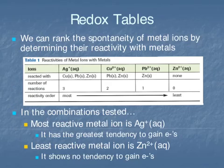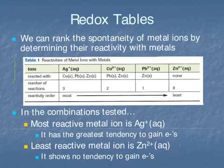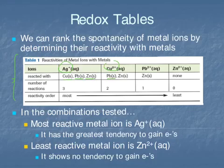Experimentally, we can determine how reactive any particular metal ion is by reacting them with different metals and determining how many different metals those ions react with. For example, in your textbook there is a table that tells you that silver ions will react with copper solid, lead solid, and zinc solid. Whereas copper ions will only react with lead solid and zinc solid. Lead ions will only react with zinc metal, and zinc ions won't react with any metals at all.